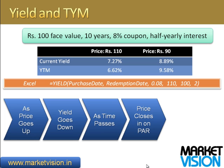As the price goes up, the yield goes down. When it was 90 rupees, the current yield was 8.89% and YTM was 9.58%; these fall to approximately 7% and 6% respectively when the price becomes 110. So price goes up, yield goes down, and vice versa. As time goes by, the price closes in on the par value of 100. So the price may be very different today, but as you come closer and closer to 2020 — with the same yield — the price will converge on the par value.